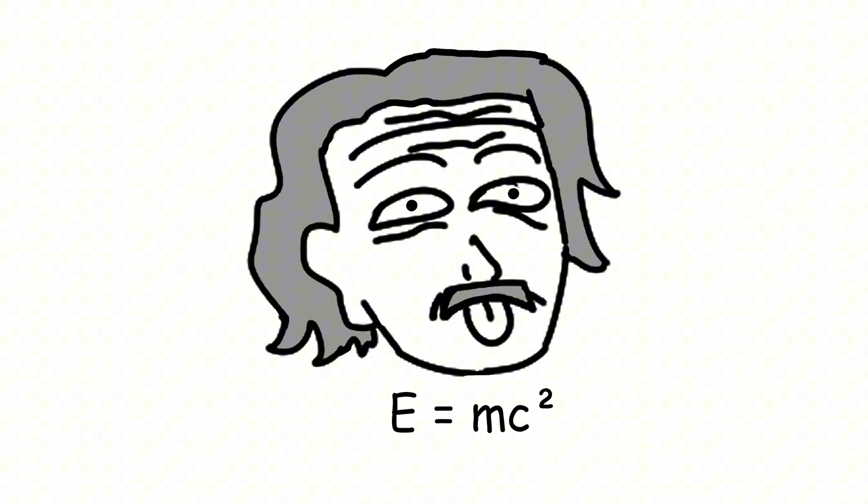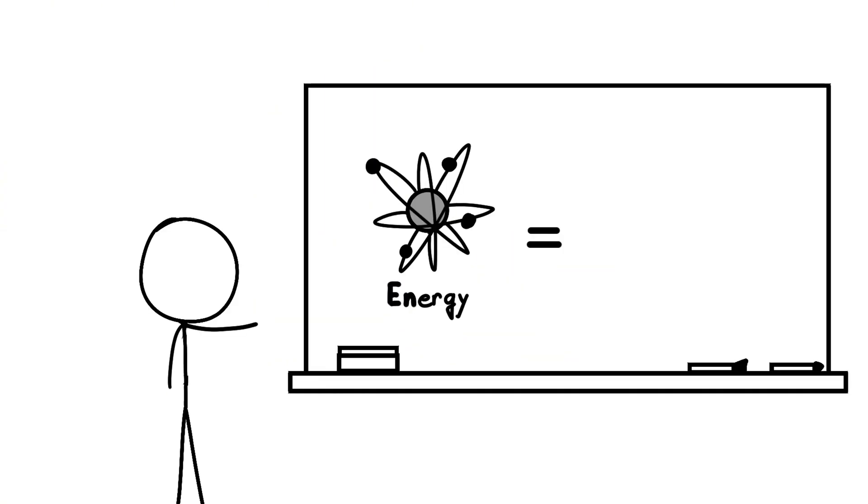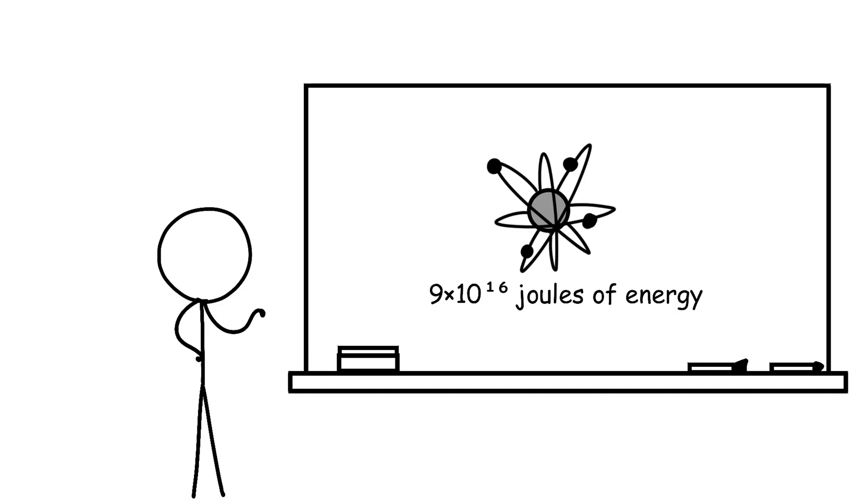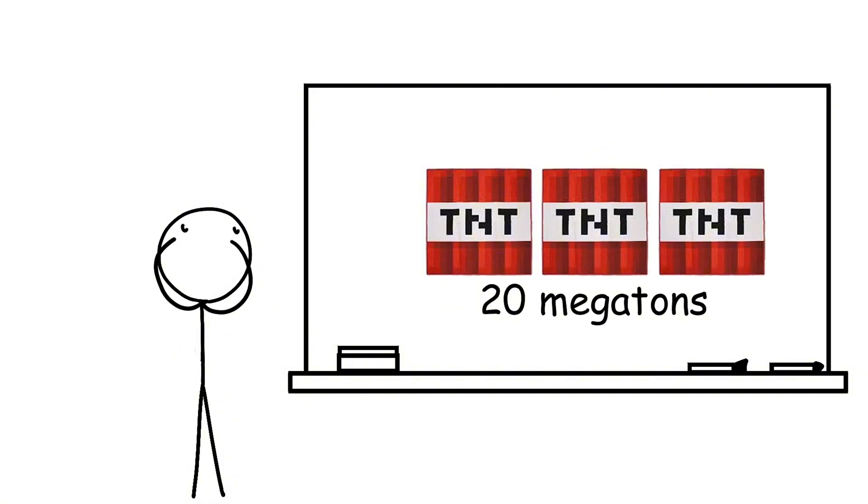Using Einstein's famous equation, E = mc², energy equals mass multiplied by the speed of light squared. That sneeze would release about 9 × 10^16 joules of energy—that's the same as 20 megatons of TNT.